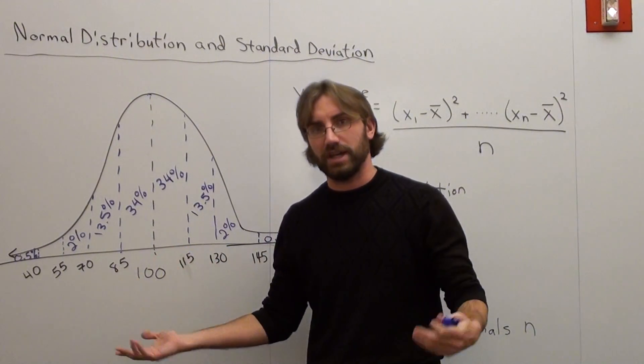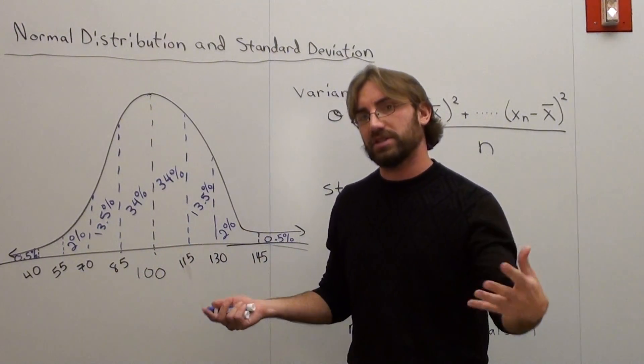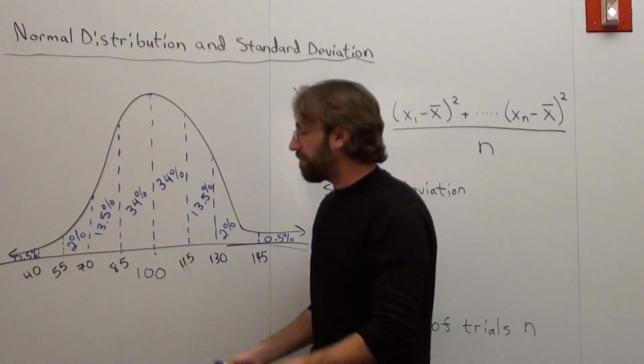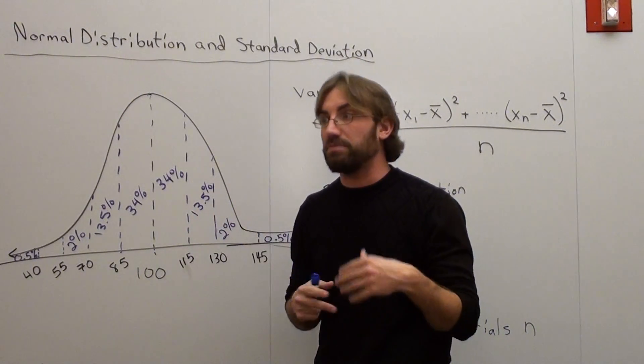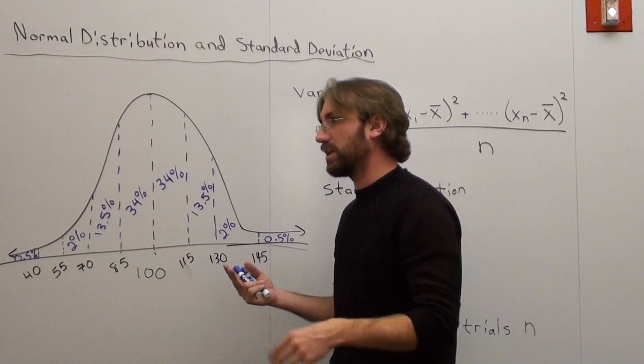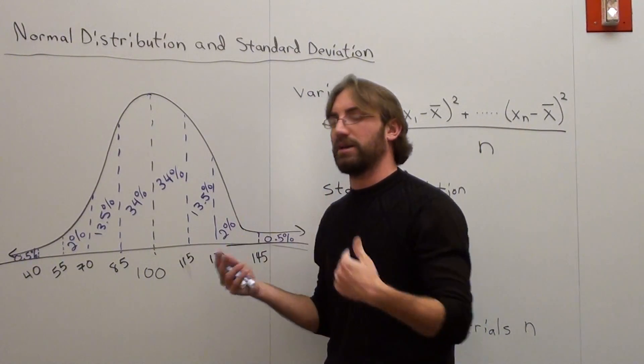For example, this is an IQ test. You probably can't see all the percentages, that's unfortunate. But basically the average score, the mean score that you're supposed to get in an IQ test, not below, not above, is 100.